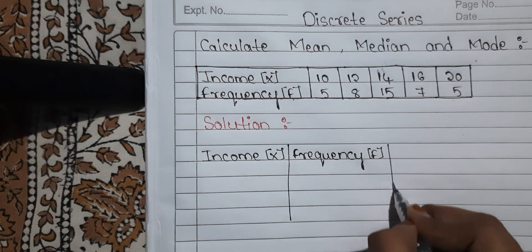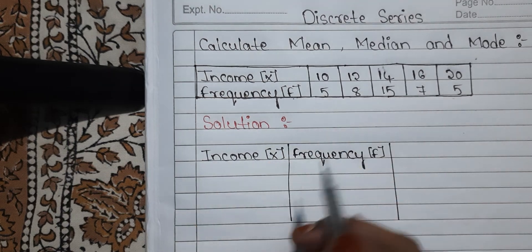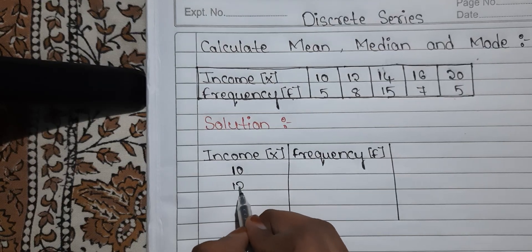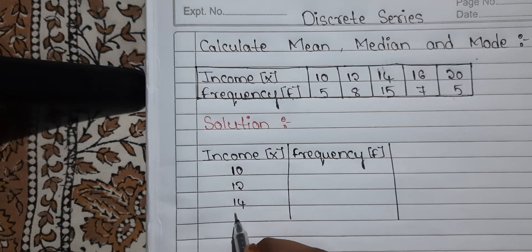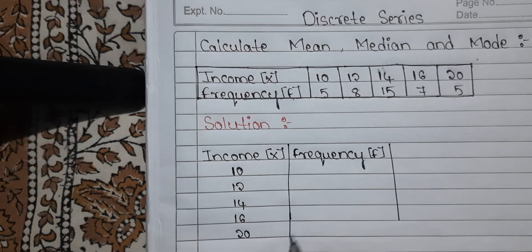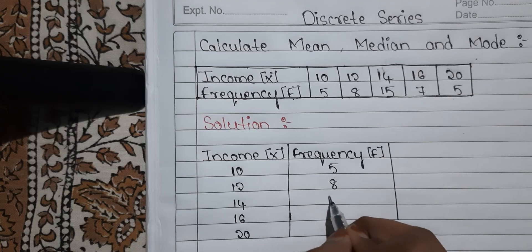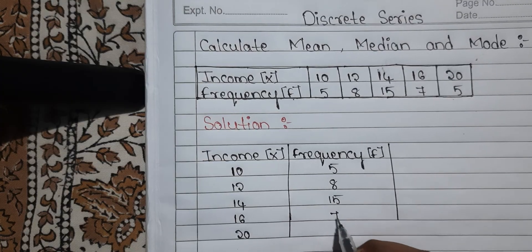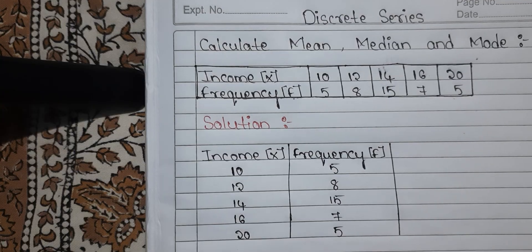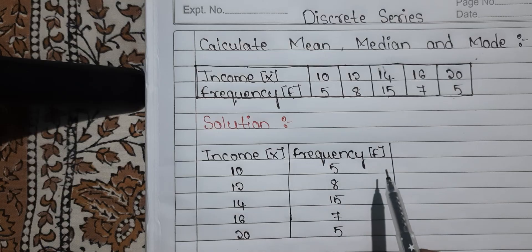Now, whatever they have given in the question, you just copy the values. Income X values are: 10, 12, 14, 16, 20. Frequency F values are: 5, 8, 15, 7, 5. This is what they have given in the question.